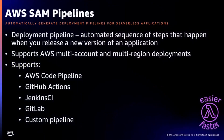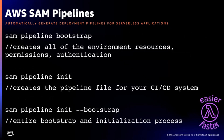Next, let's talk about SAM Pipelines — a new capability of the SAM CLI that lets you automatically generate deployment pipelines for your serverless applications. A deployment pipeline is an automated sequence of steps that happen when you release a new version. SAM Pipelines supports multi-account and multi-region deployments, and supports AWS CodePipeline, GitHub Actions, Jenkins, and GitLab, with templates for all of these. It's composed of two commands: SAM pipeline bootstrap, which creates the AWS resources required to create a pipeline, and SAM pipeline init, which creates a pipeline file for your preferred CI/CD system. You can also combine them with SAM pipeline init-bootstrap.